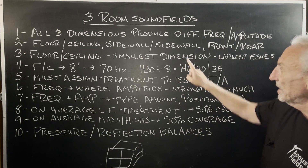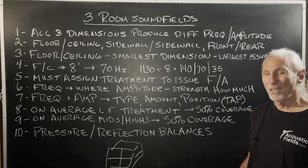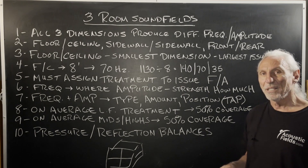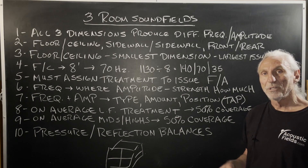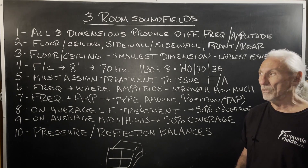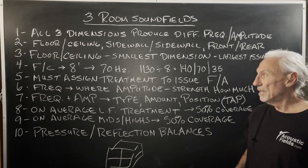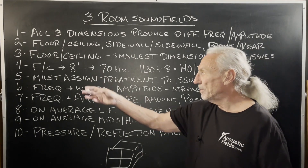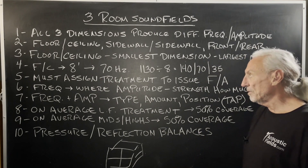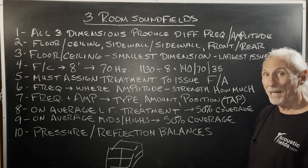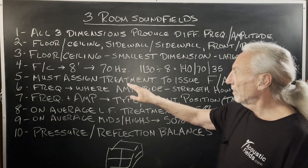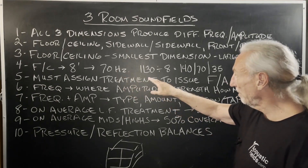Floor to ceiling is the smallest dimension probably 95% of the time. We see in drum rooms and piano rooms that sometimes the ceiling is the highest dimension or one of the higher numbers. But most of the time it's the lower of the three. So let's take eight feet — the standard ceiling height we work with in North America. It's a big pain, to be quite honest.